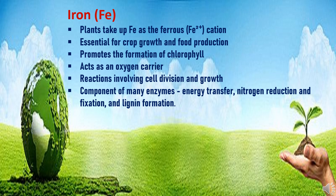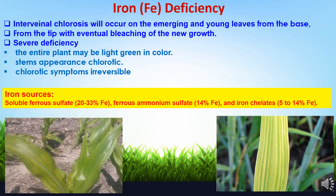Iron is taken by plants in the form of cation. Iron is essential for crop growth and food production, and it promotes the formation of chlorophyll, which plays an important role in photosynthesis. Iron acts as an oxygen carrier in reactions involving cell division and growth, and is a component of many enzymes associated with energy transfer, nitrogen reduction and fixation, and lignin formation. Deficiency symptoms of iron include interveinal chlorosis occurring on emerging and young leaves from the base, with eventual bleaching of new growth. When severe deficiency occurs, the entire plant may be light green in color and even the stems appear chlorotic.